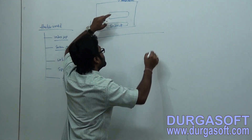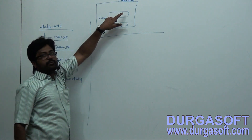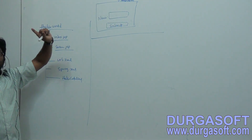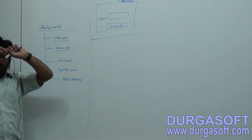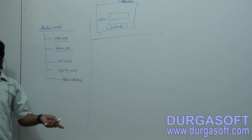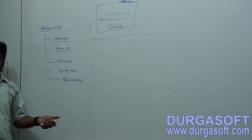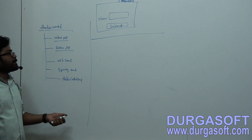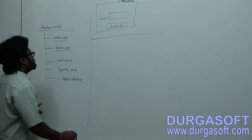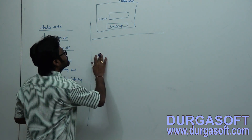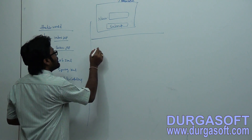When you configure the .htm extension in your form action, in your web.xml file, your URL pattern should be star.htm.